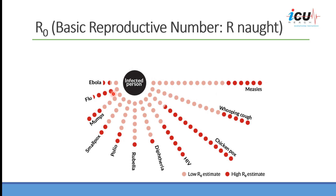Influenza has an R-naught between 1.2 to 4.5, depending on the season, meaning that a single influenza case can infect that number of people around it. COVID-19 has an R-naught of 2 to 3, meaning that a single case of coronavirus will infect between 2 to 3 people around it. In general, if the R-naught is above 1, the endemic or pandemic will continue to progress.